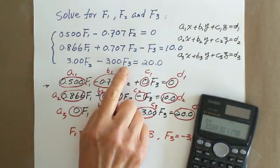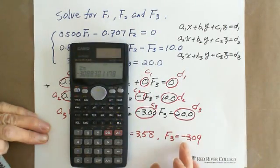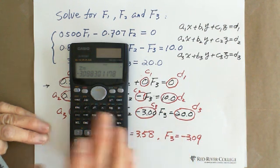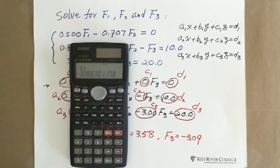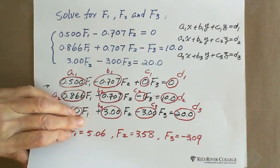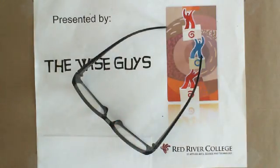Don't worry about negative. The negative means because when you're setting the equation, you're just assuming the direction. When you got the answer with negative, that means the exact direction is opposite with your setting. So this is presented by Wiseguys, thank you.